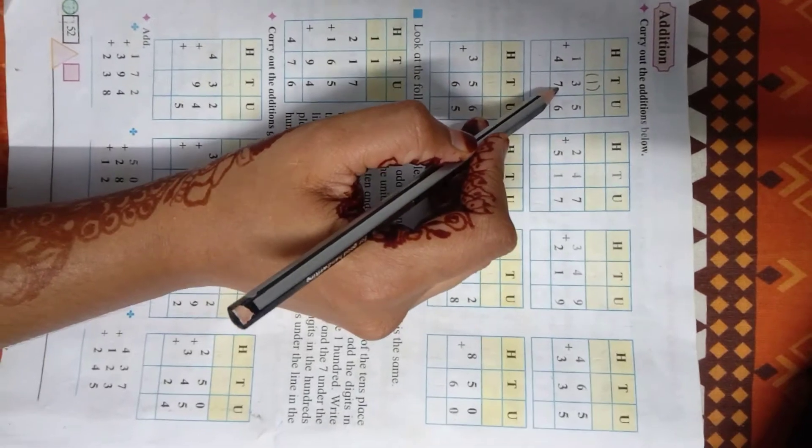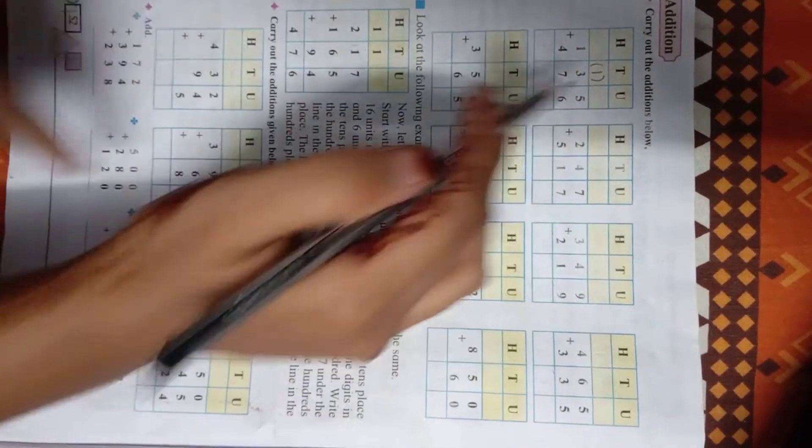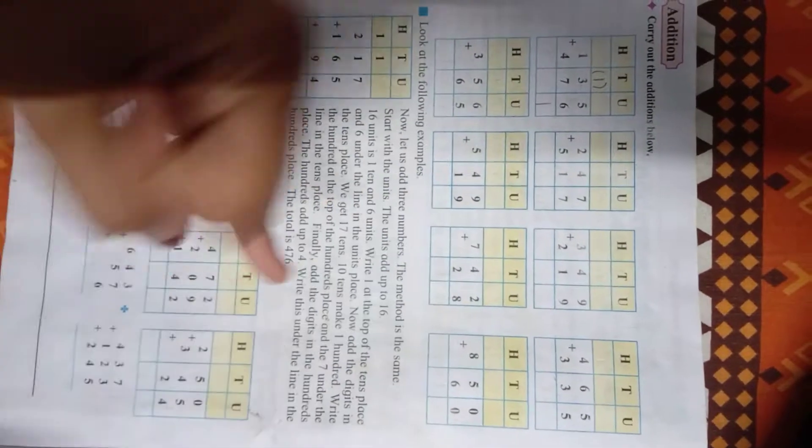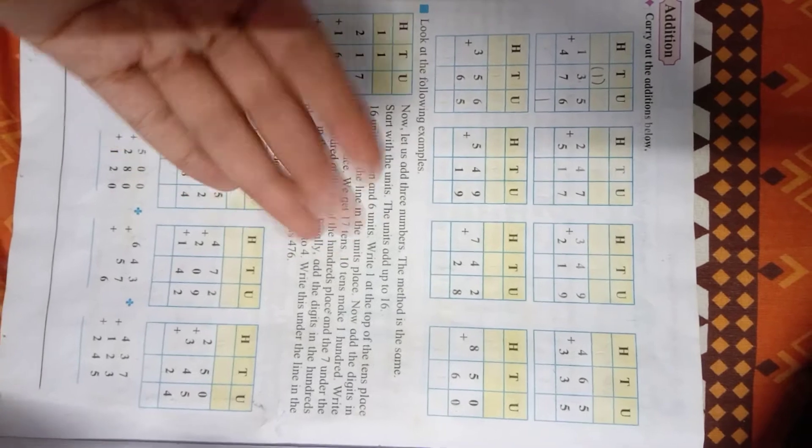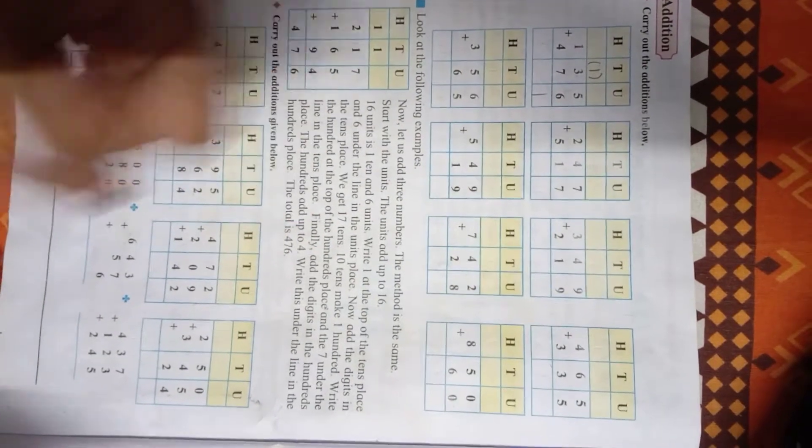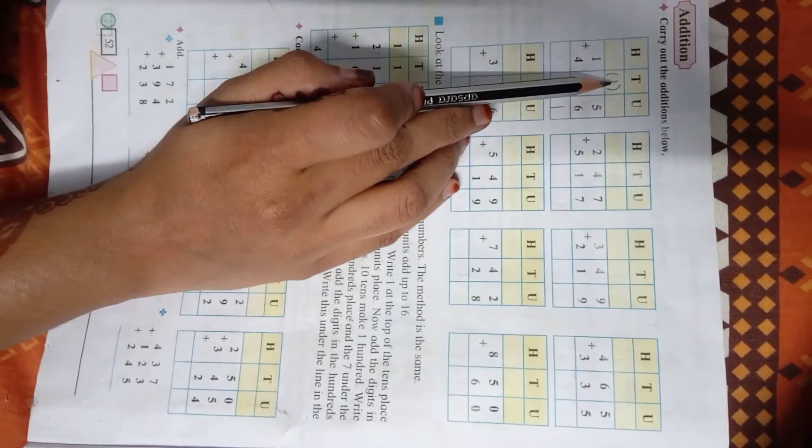Then 3 plus 7, how much? So after 3 we will count 7 fingers, so 4, 5, 6, 7, 8, 9, and 10. And then we have to add this carry also. Means 10 plus 1, how much? 11.